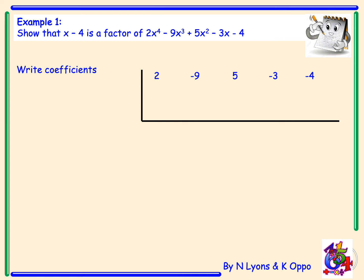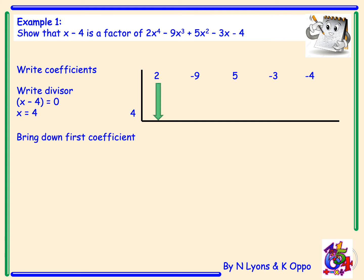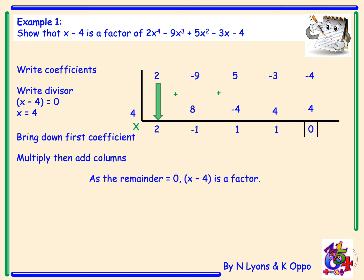We equate x - 4 = 0, giving x = 4 as our divisor for synthetic division. Bringing 2 down: 4 × 2 = 8; -9 + 8 = -1; 4 × (-1) = -4; 5 + (-4) = 1; 4 × 1 = 4; -3 + 4 = 1; 4 × 1 = 4; and -4 + 4 = 0. As the remainder equals 0, this means that x - 4 is a factor.